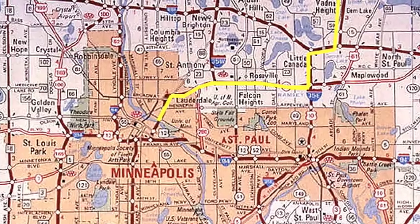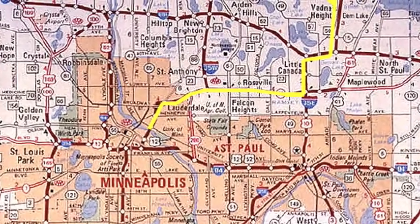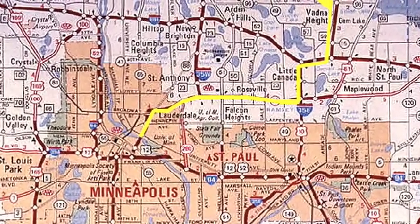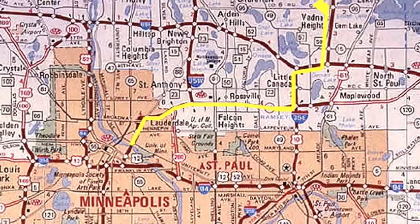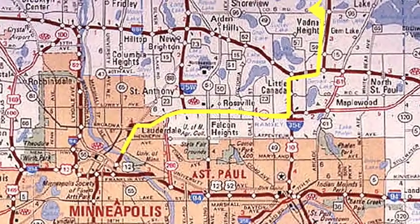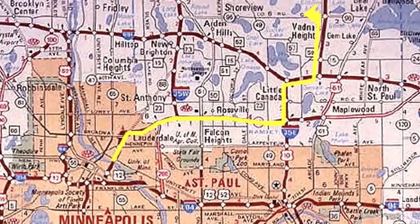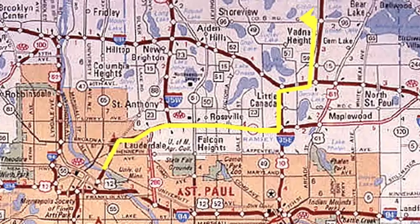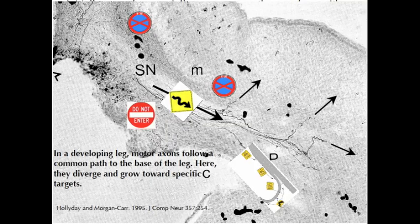Remember, the road trip analogy states that migrating growth cones detect the pathways, direction signs, and exit ramps that allow navigation to their synaptic targets. In this developing chicken leg, incoming axons, seen as thin black lines, take a common path to exit ramps, which are arrows, that lead to their specific targets. Growth cones must detect the extracellular guidance cues that mark these pathways.